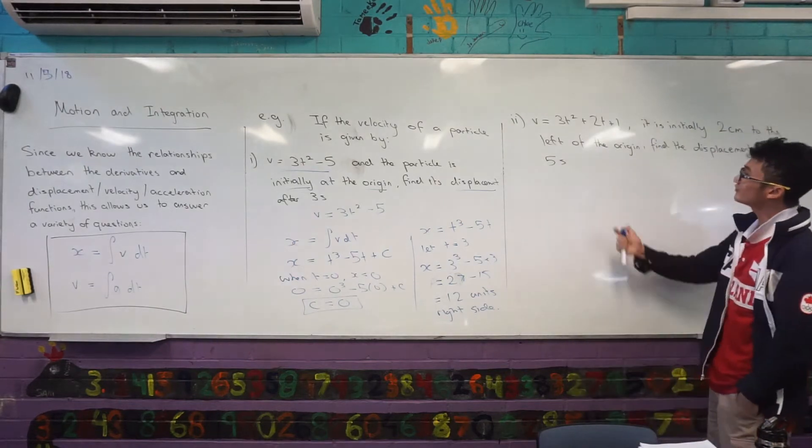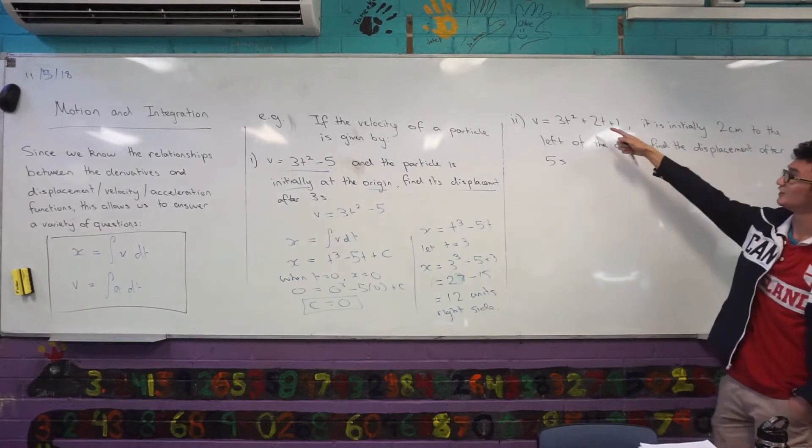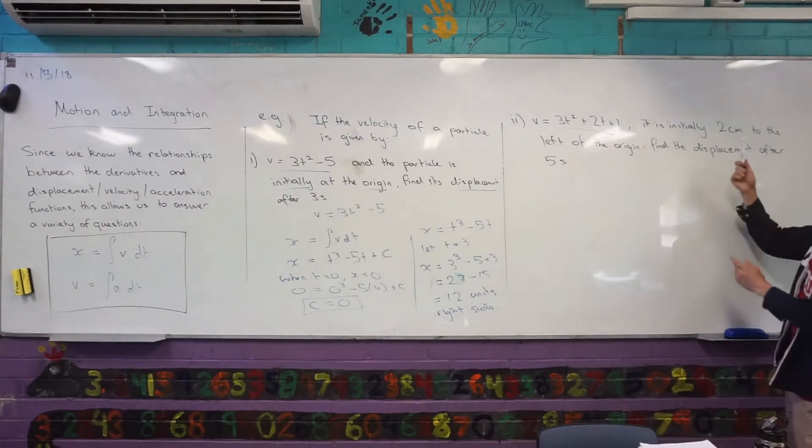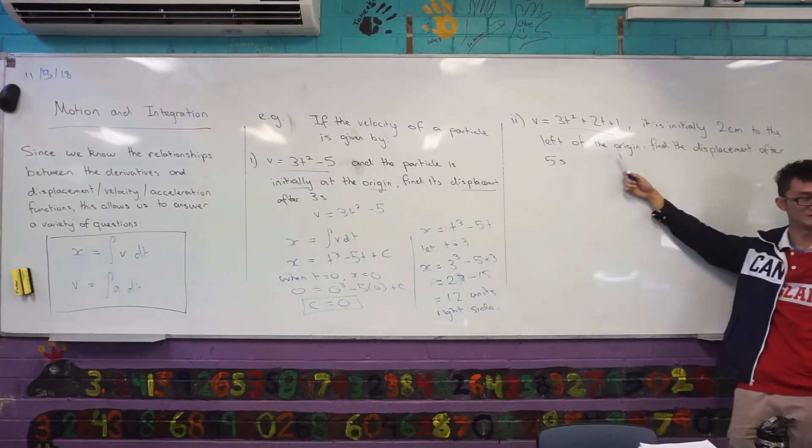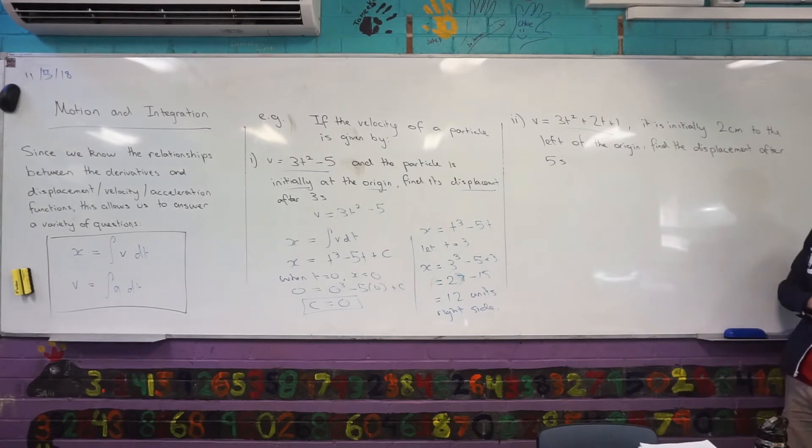For example, in the next question here, in this case, same idea, I'm given the velocity, I'm given some different information here. I've got this function here, that's important, but it tells me it's initially 2cm to the left of the origin. So I'm already thinking about what that actually means in the back of my mind. And I want to find the displacement after 5 seconds.